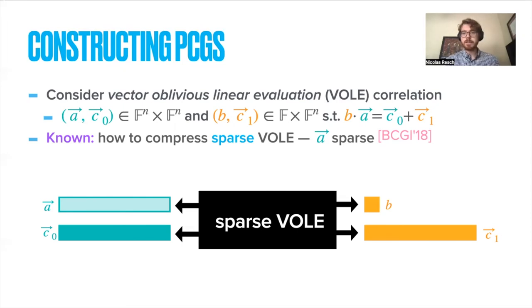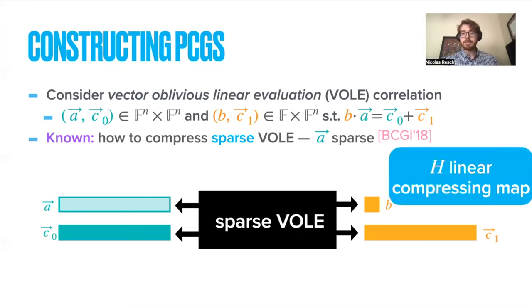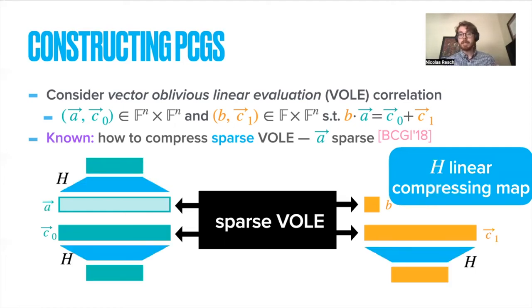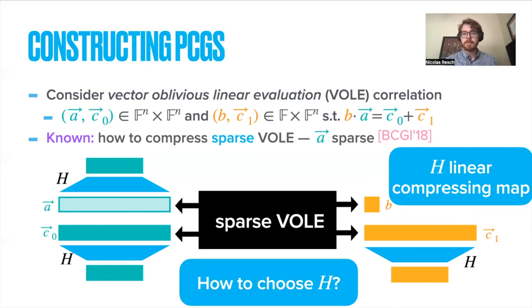What could we do to try to convert this into a genuine VOLE instance? Suppose that we have some linear map H, and we apply it to all the vectors that we obtain. Notice that the outputs then will still satisfy the b times a equals C0 plus C1 correlation. Furthermore, assuming H is not too structured, doesn't have any weird behavior, it's reasonable to suspect that H times a will look uniformly random. This is exactly what the LPN assumption tells you if H is chosen uniformly at random. However, we can try to be a bit more aggressive. We have some desires in terms of constructing these PCGs in terms of efficiency. How could we add maybe some structure to H while still making this whole thing work?